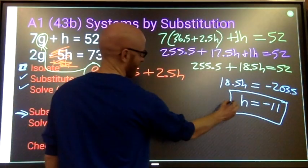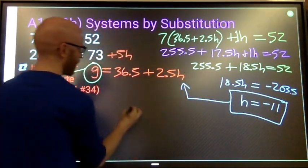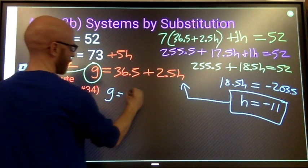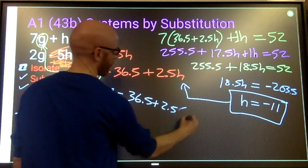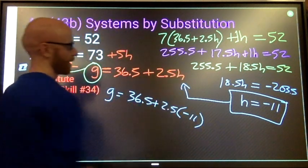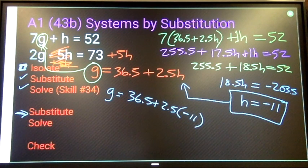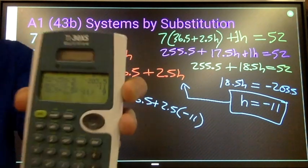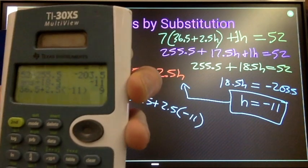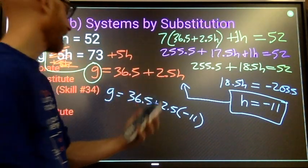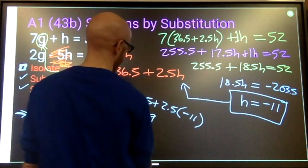No kind of algebra to do. 36.5 plus 2.5 times negative 11 instead of h, and you just do your calculation with a calculator. And we get this. H or g equals 9.